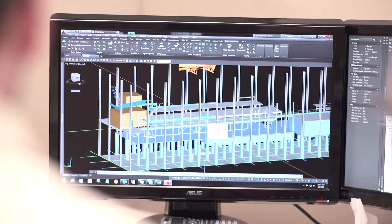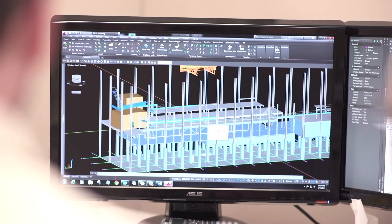So we've gone out into the field, we've collected all of our data, and now we've put it into the computer, and now what are we looking at? This is a program called AutoCAD, and we use it for 3D modeling as well as producing 2D drawings.